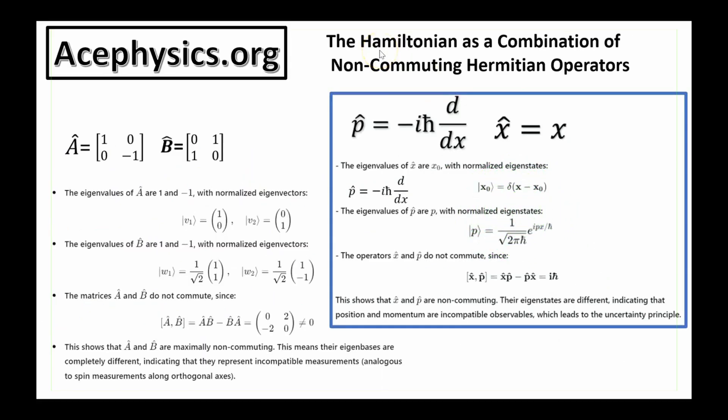In quantum mechanics, a Hamiltonian represents the total energy of the system, and it's often composed of operators that do not commute with each other. This non-commutativity is crucial because it reflects the idea that corresponding physical observables, such as position and momentum, cannot be simultaneously measured with absolute precision, giving rise to the uncertainty principle.